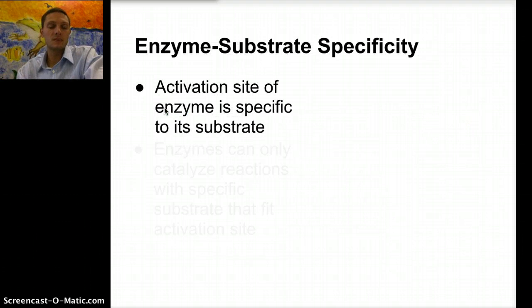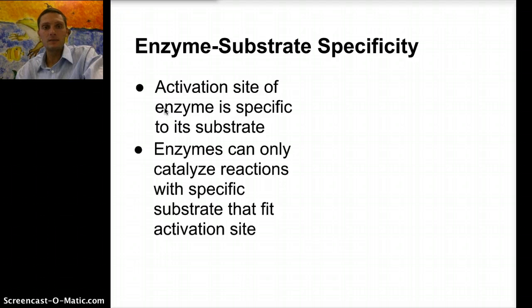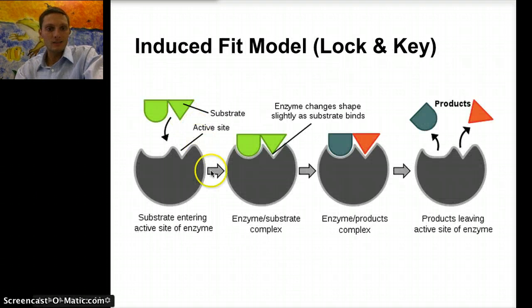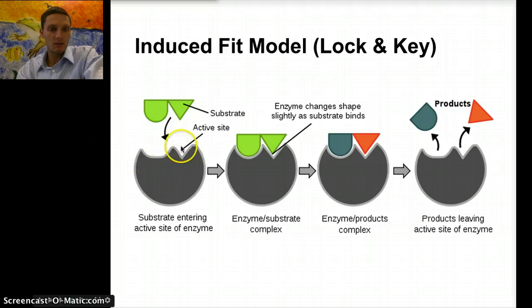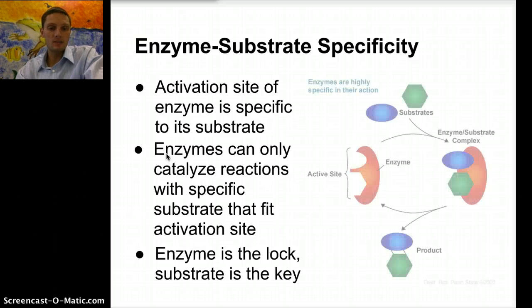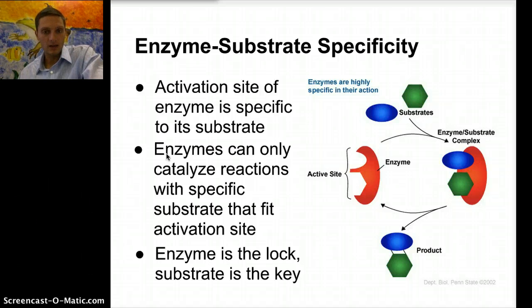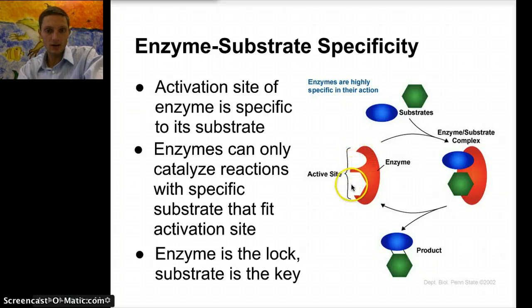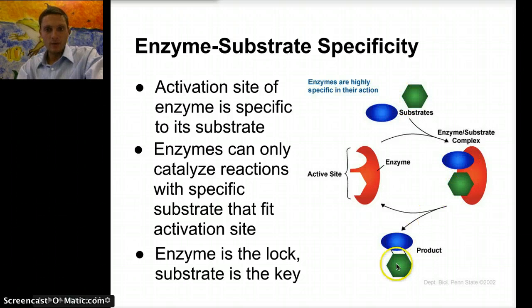The active site of an enzyme is specific to its substrate. Enzymes can only catalyze reactions with specific substrates that fit the active site. Our active site is the actual portion of the enzyme where the substrate is binding. The enzyme is the lock; the substrate is the key. Here's another diagram outlining the same process — the active site is where the substrate bonds, and then we produce a product.